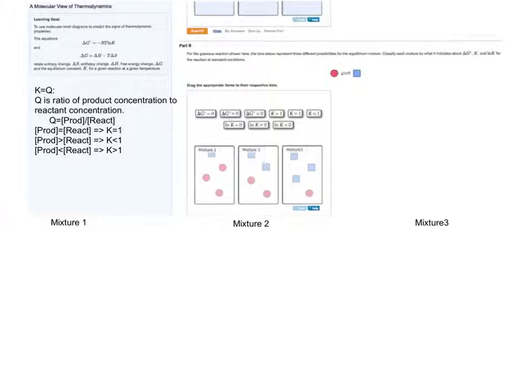If the product concentration is less than the reactant concentration, given Q is equal to K, the equilibrium constant will be greater than 1. We can relate this information here to the graphs here.